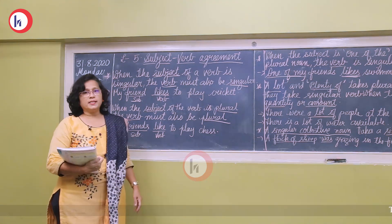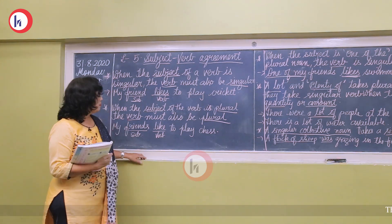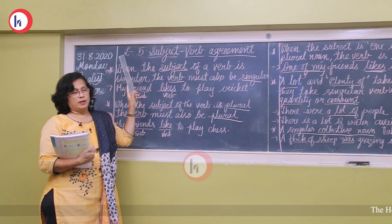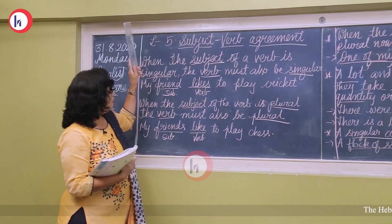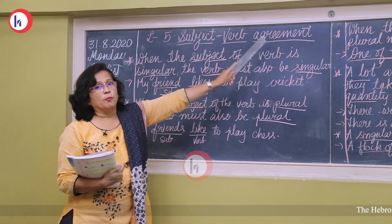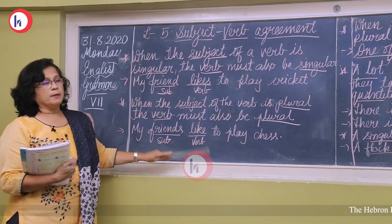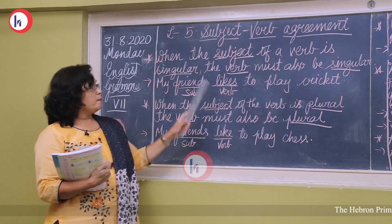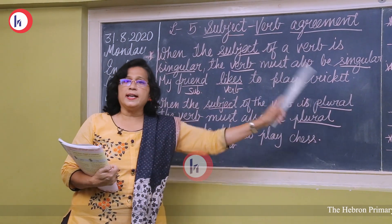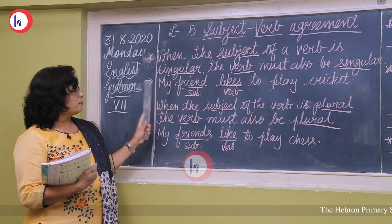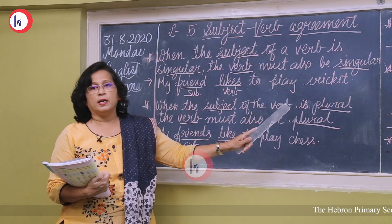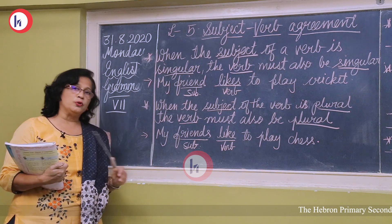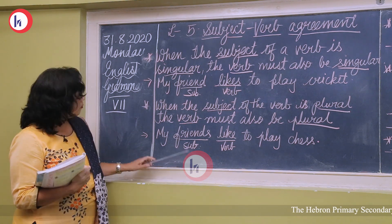Now we'll move to lesson number five: subject and verb agreement. The subject should always match with the verb. When the subject of a verb is singular, the verb must also be singular. When the subject is plural, the verb is also plural. For that, you should know which is the subject and which is the verb.